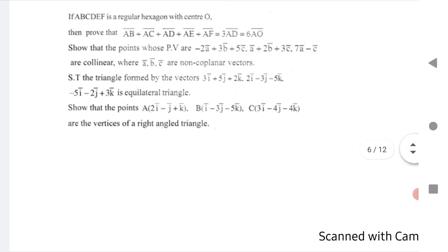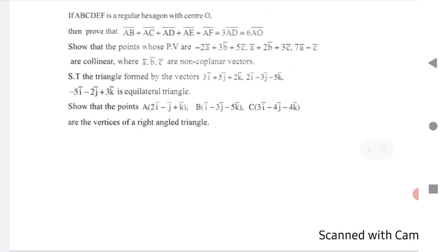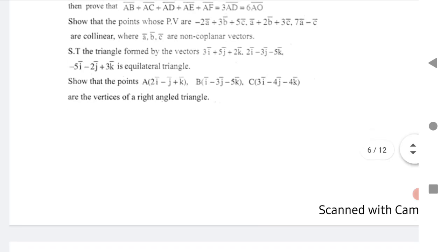Show that the triangle formed by the vertices is an equilateral triangle. Show that the points A, B are given, which are the vertices of - three points are given, you have to show that they are the vertices of a right angle triangle.